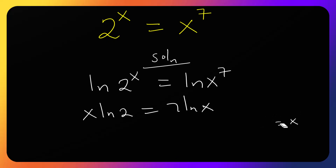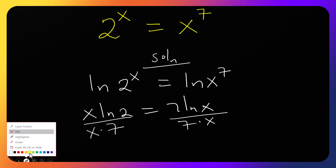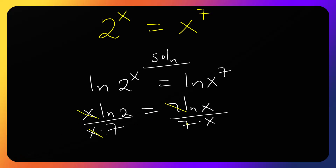From here we can group like terms — those in terms of x and those without x. We divide both sides by 7 and rearrange, leaving us with ln(2)/7 = ln(x)/x.